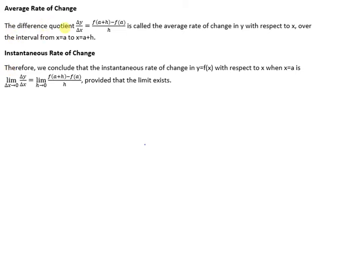So the average rate of change, the difference quotient, delta y over delta x, we just talked about that. f at a plus h minus f at a all over h. And this is called the average rate of change in y with respect to x over the interval x equals a to x equals a plus h.